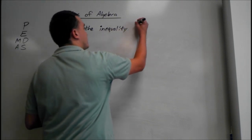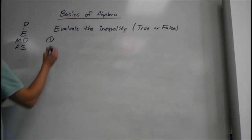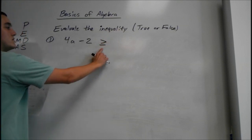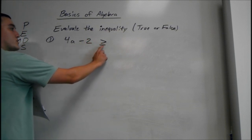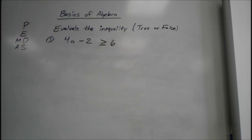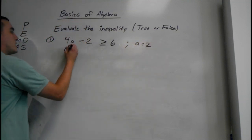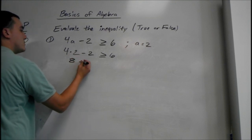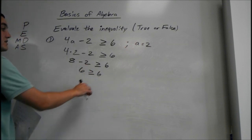These are going to be true or false. First one: we have 4A minus 2 is greater than or equal to 6 — whatever the mouth of the symbol is open towards is the greater one, and whenever it's got the bar under it that means equal to. A equals 2, so plug it in: 4 times 2 minus 2 is greater than or equal to 6. 4 times 2 is 8, minus 2 is 6, so this turns into 6 is greater than or equal to 6. Well, 6 is equal to 6, so this is true.